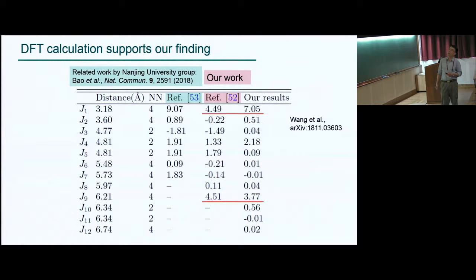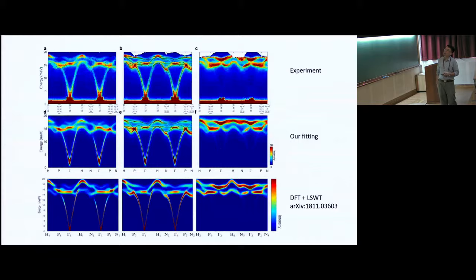And our result is very recently supported also by DFT calculations done by Nanjing University, group led by Professor Shen Gang-Wan. And they have been collaborating with another experimental group from Nanjing University working on the same material, but back then, their model did not consider the presence of J9. Actually, this is DFT calculation, and indeed, the large value of J9 is supported, and this is our experimental value. So, yeah, so using the DFT result to directly calculate the spin waves, and this is what they get. So it looks pretty much similar to what we had.